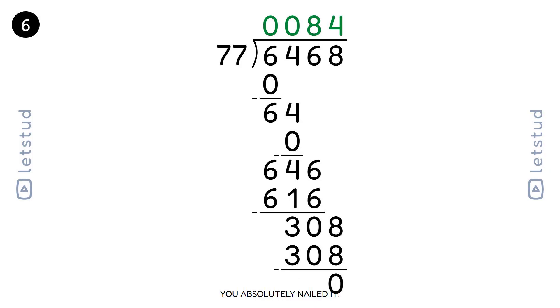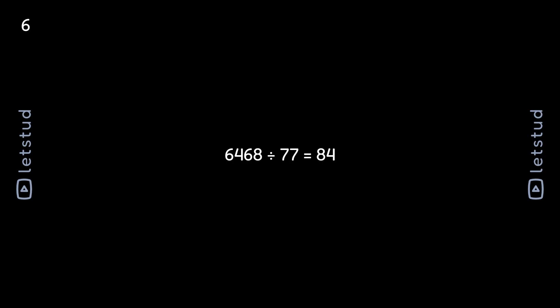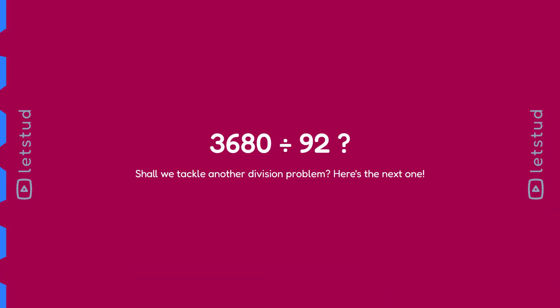You absolutely nailed it! We've finished this division. You're amazing — you divided 6468 by 77 like a pro. Shall we tackle another division problem? Here's the next one.